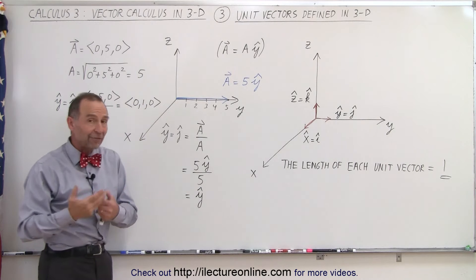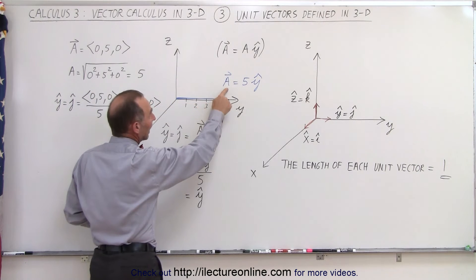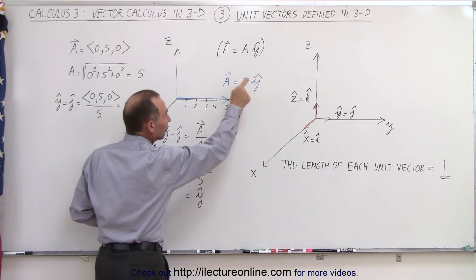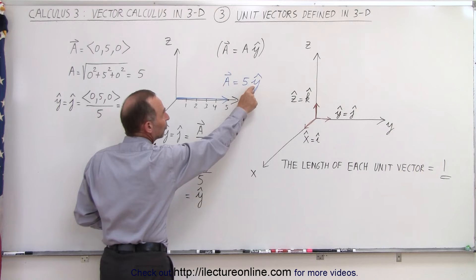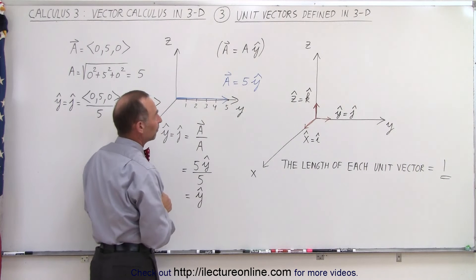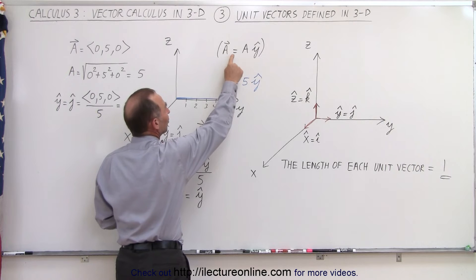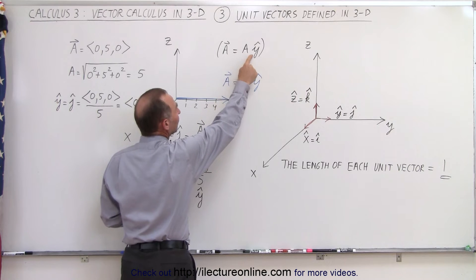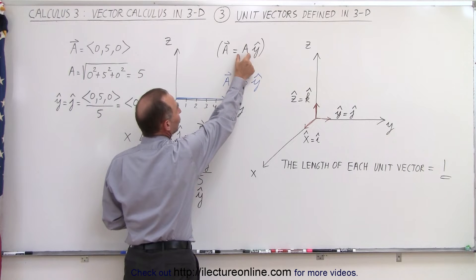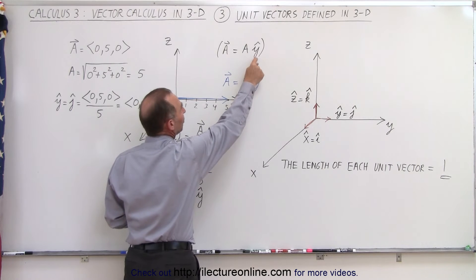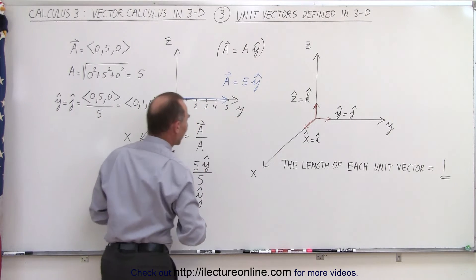Now let's say that we have a vector — a simple vector that's pointing in the y-direction only, and that has a length of 5 in the y-direction. This is how you can read it: it has a magnitude of 5, and it's pointing in the positive y-direction. So we can say that we have vector a, which has a magnitude a times the unit vector y. The magnitude of the vector is equal to 5, and it's pointing in the direction of the y-unit vector — pointing in the direction of the y-axis.